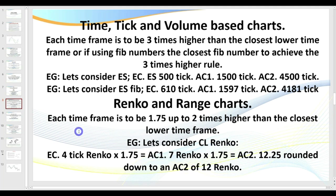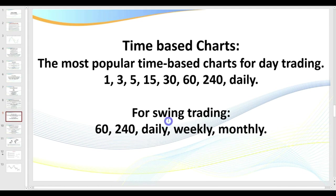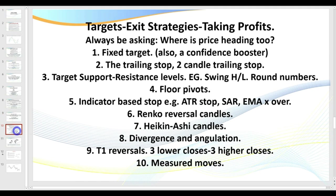When it comes to time-based charts, the most popular for day trading are the one minute, three, five, fifteen, four-hour (240), and daily. For swing trading, many traders will use a 60-minute chart to time their entries, along with a four-hour, daily, weekly, and monthly. You could set up your anchor charts as one hour, four hour, and daily for short-term swing trading. As we get out to weekly and monthly trading we start to become position traders, trading over a much larger time period.